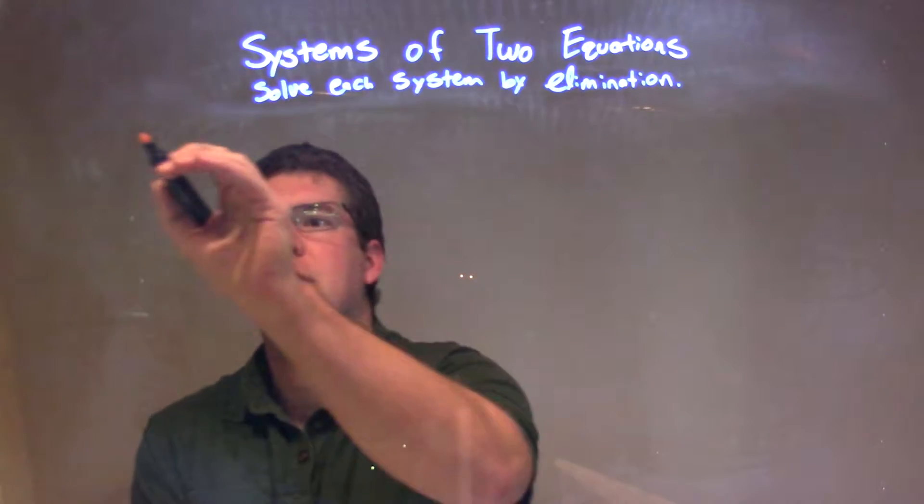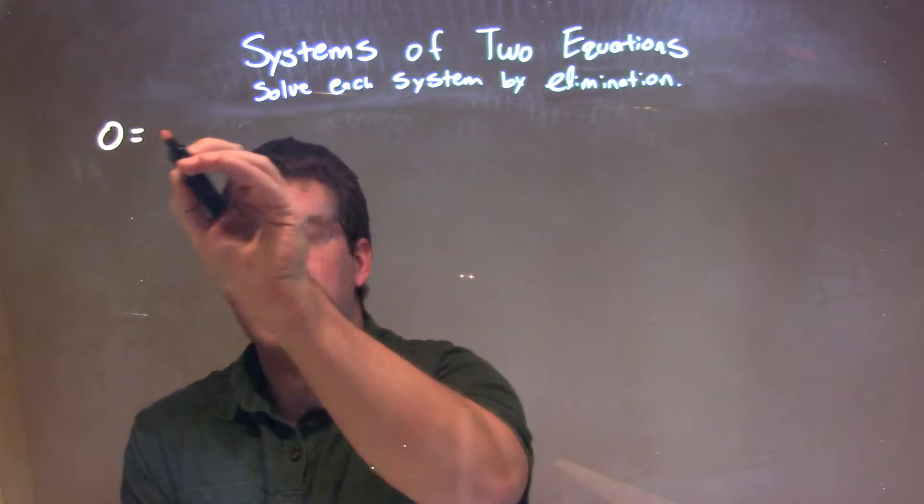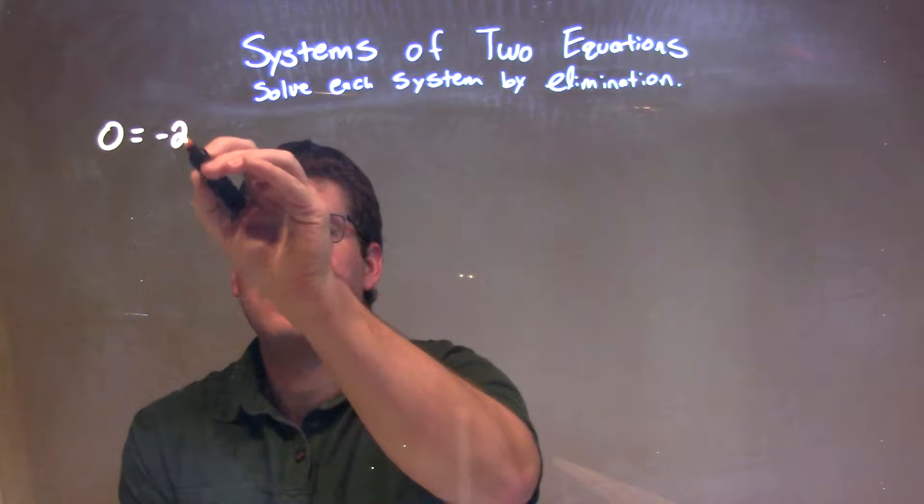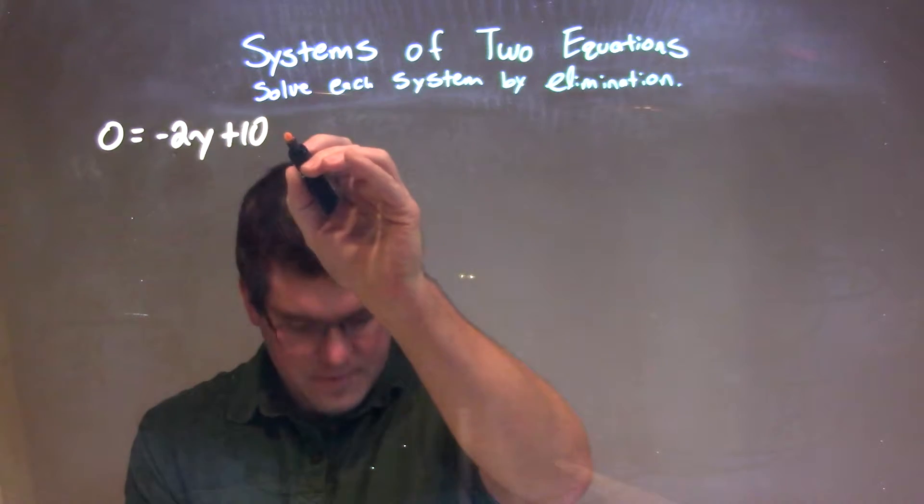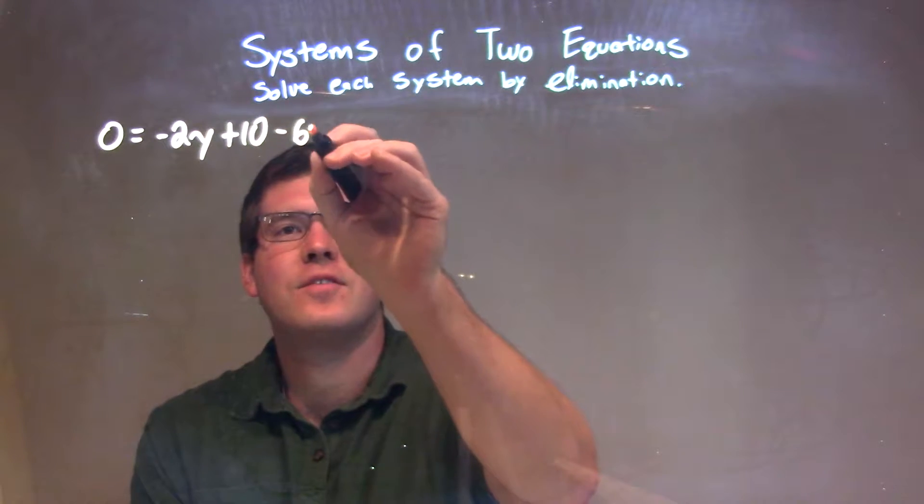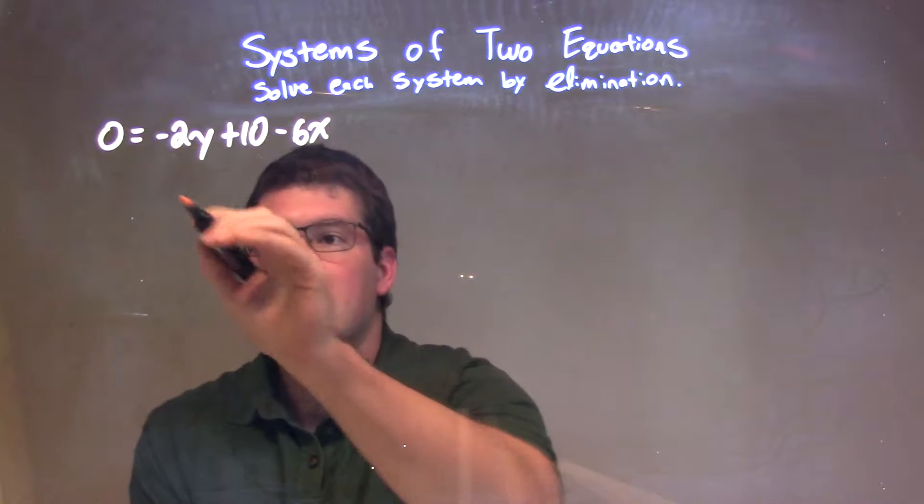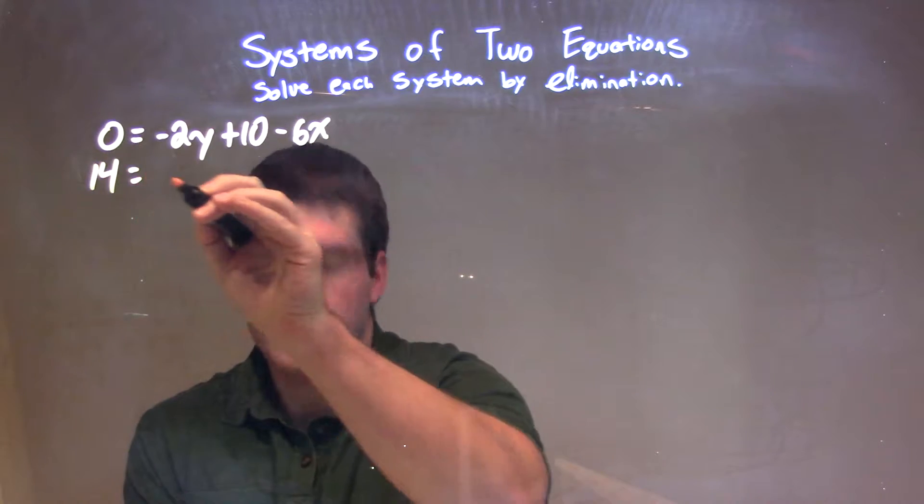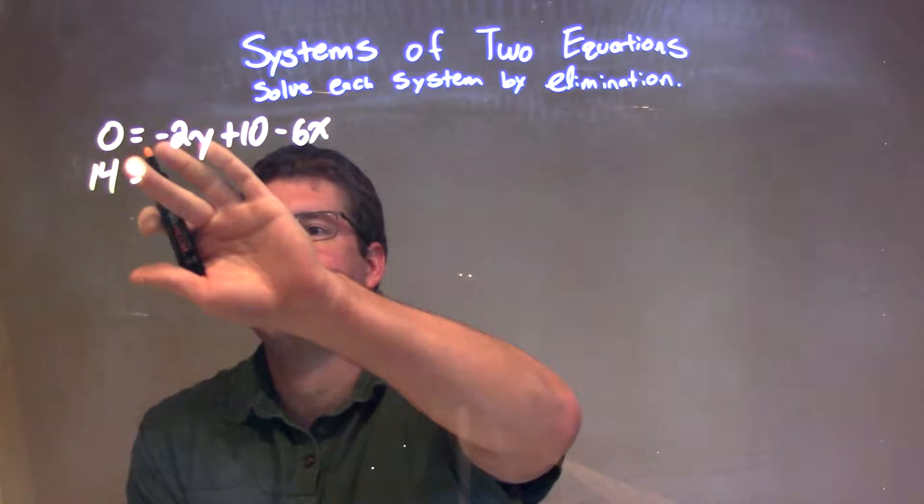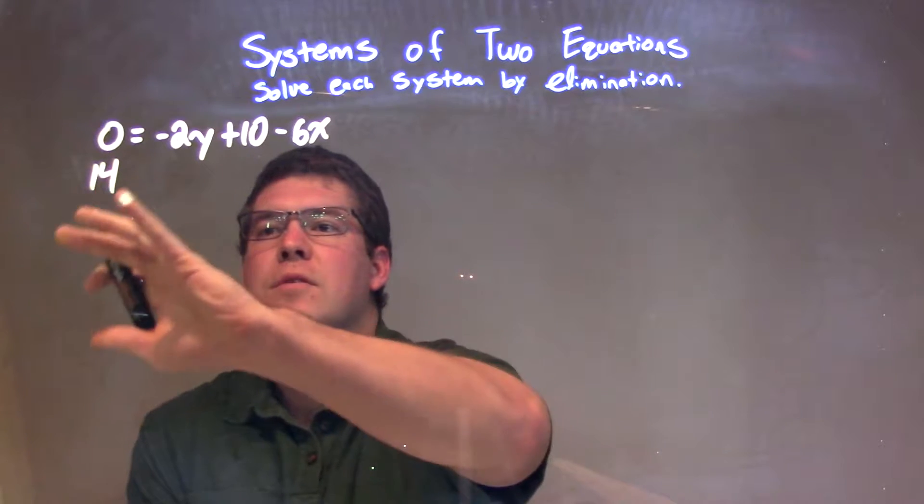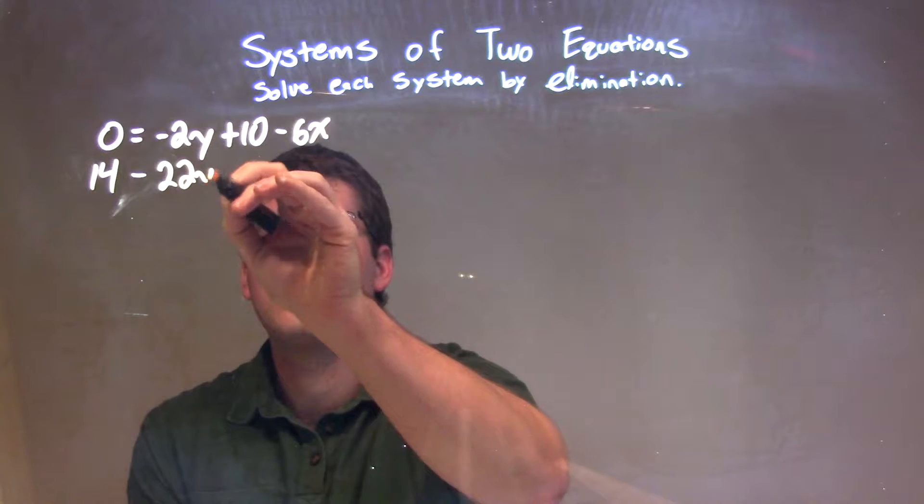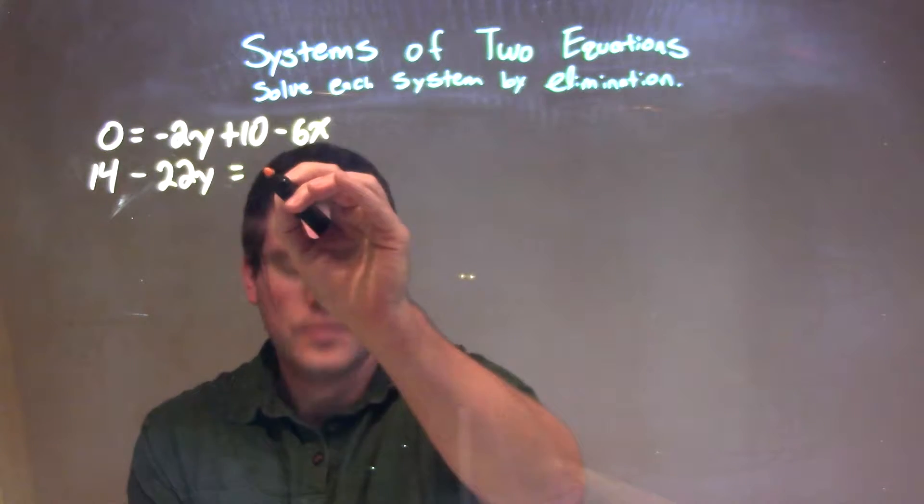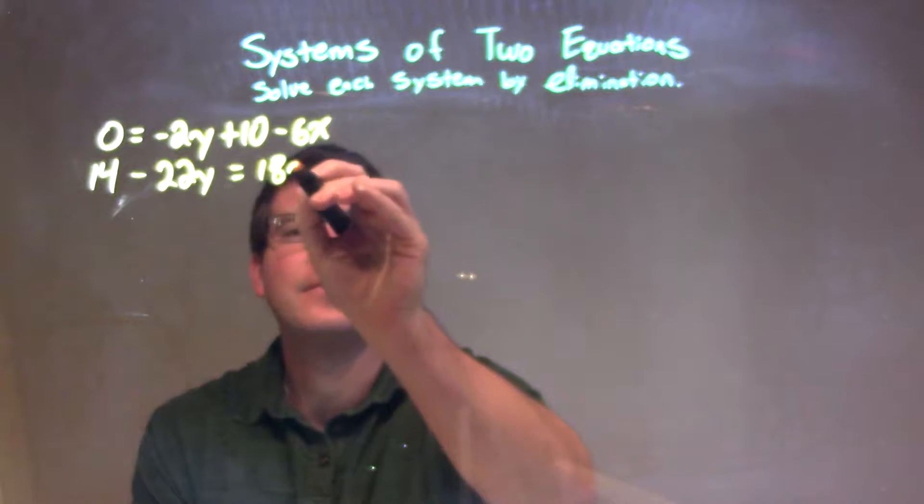If I was given this system, zero equals negative 2y plus 10 minus 6x. The second equation is 14 minus 22y equals 18x.